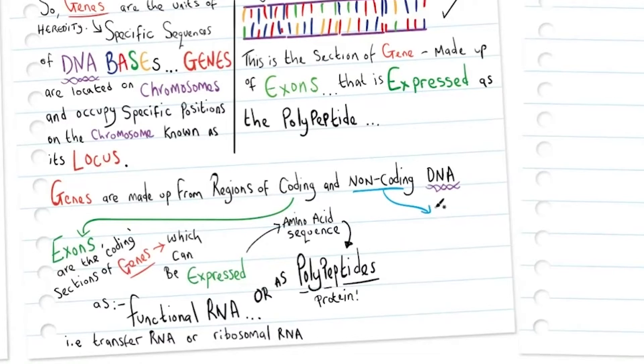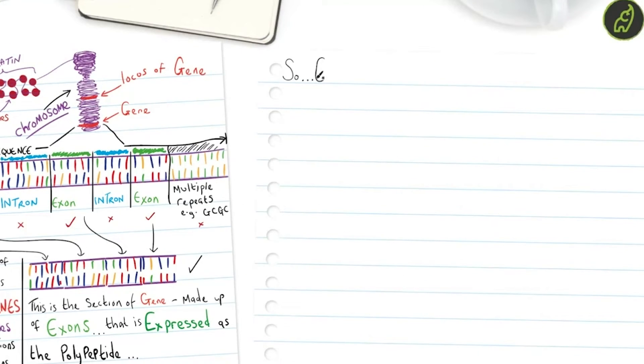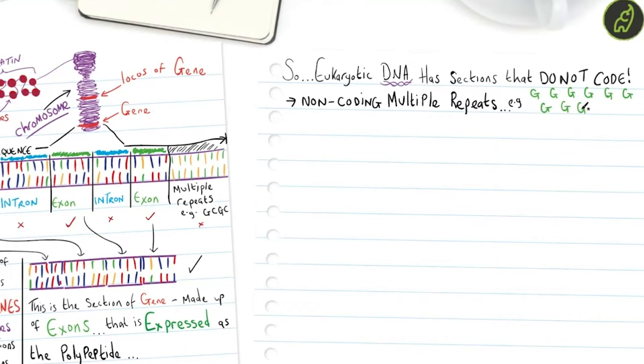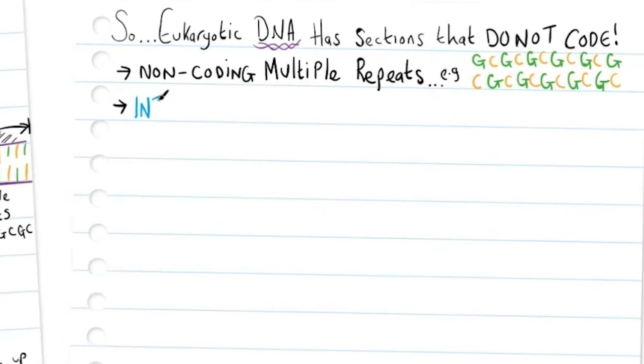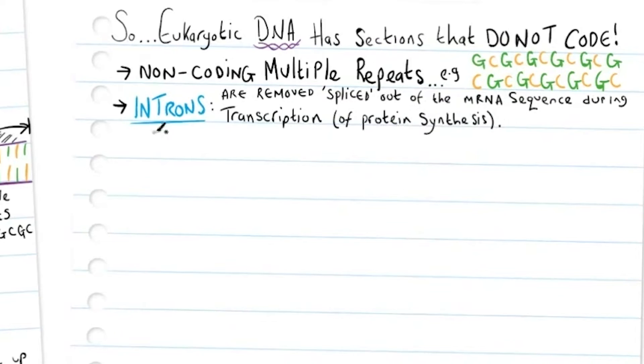The non-coding sections of DNA, introns and multiple repeats, do not code. Eukaryotic DNA has sections that do not code, these non-coding multiple repeats, for example GC-GC-GC-GC, etc., and introns. Introns are removed or spliced out of that pre-messenger RNA sequence during transcription. Therefore introns stay inside the nucleus.